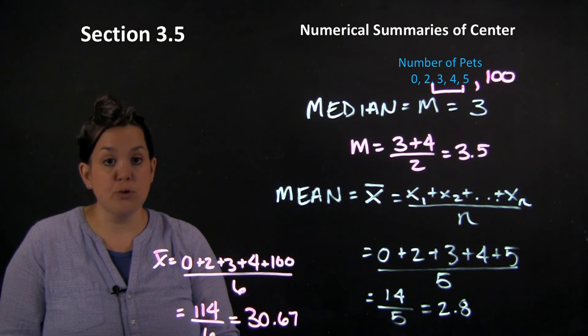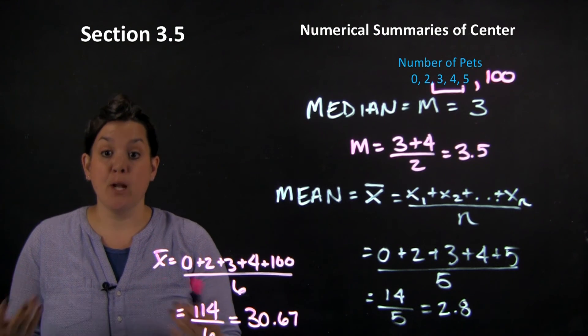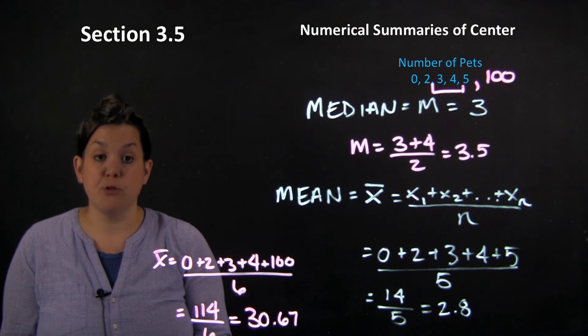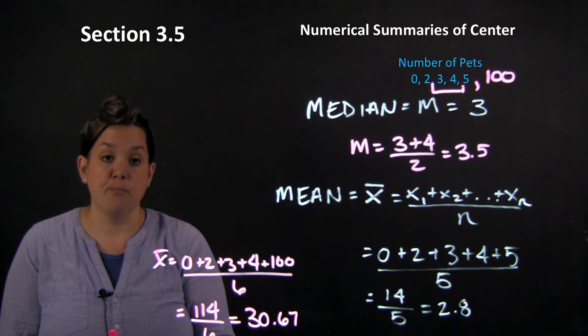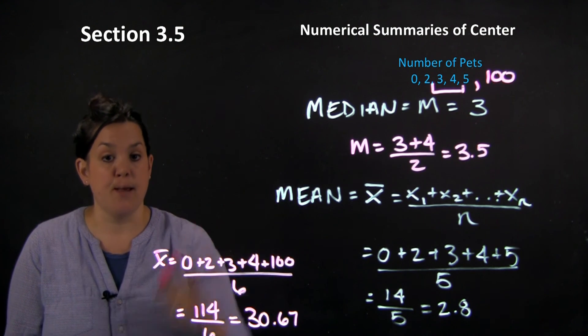So those are two looks at numeric summaries of center. And again, remember that when you describe a distribution, you have two measures of center now that you can use, both the median and the mean.